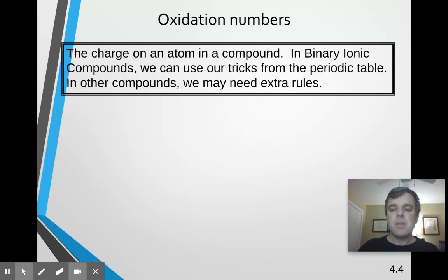For the next type, for redox reactions, first of all, we need to discuss oxidation numbers in more detail. So first of all, an oxidation number is the charge on an atom when it's in a compound.